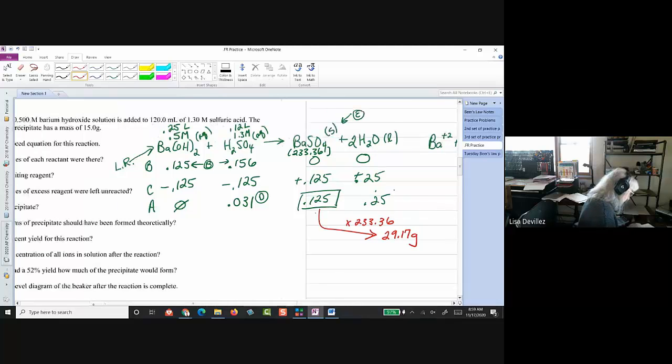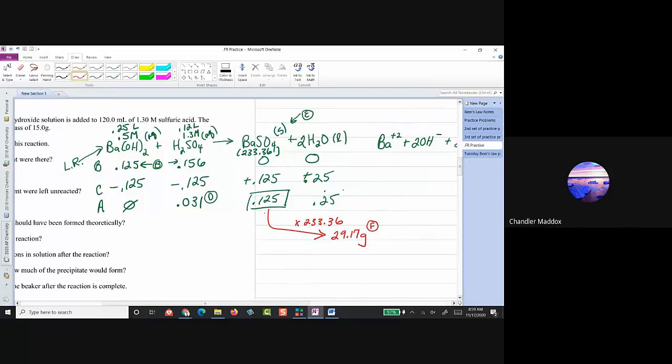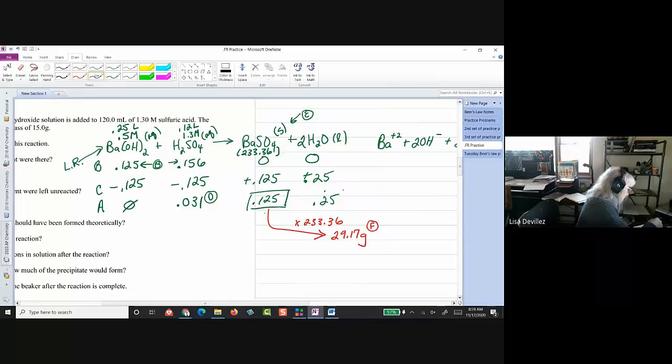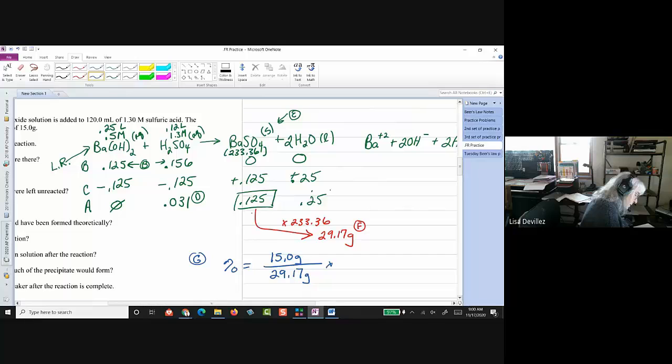So, that is F. Okay, and then it wants percent yield. So, G is the percent yield. So, the percent equals, it said we had 15 grams recovered of the precipitate. So, 15, divided by my theoretical, times 100, so 15, divided by 29.17, so I'm getting about 51.4%.